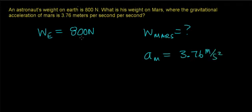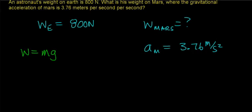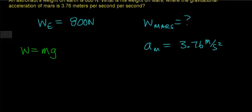The first thing that we need to do is remember that the definition of weight was equal to mass times the gravitational acceleration. So we need to discover what your mass is, because your mass on Earth will be equal to your mass on the planet Mars. You're given the weight, and you should already know the gravitational acceleration on Earth as 9.8 meters per second squared.